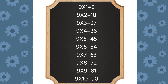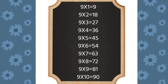Nine ones are nine. Nine twos are eighteen. Nine threes are twenty-seven. Nine fours are thirty-six.